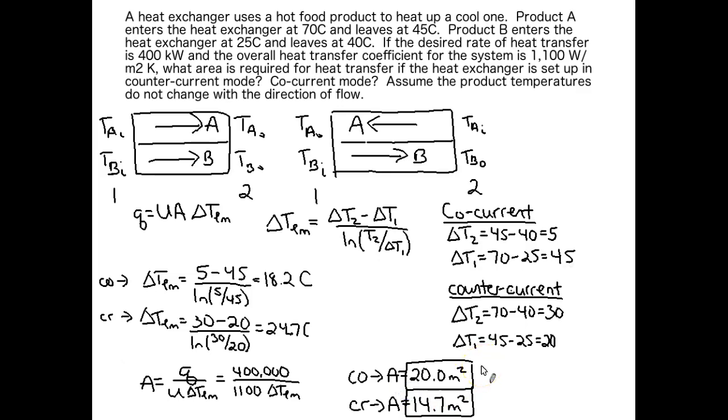All right, you can see that I need quite a bit more area for co-current versus counter current. And this makes sense because the delta T log mean for counter current was larger than the one for co-current. So I need less area to accomplish the same amount of heat transfer in counter current mode. Given this, it probably doesn't surprise you that the vast majority of heat exchangers in industry are set up in counter current mode. That efficiency of heat transfer really adds up over time.